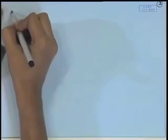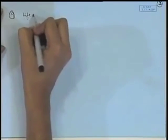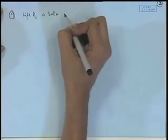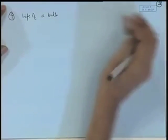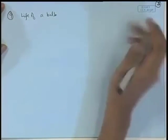Suppose we consider a mechanical instrument such as the life of a bulb. When you purchase a bulb from the market and light it, it may work for 1 hour, 10 hours, or 100 hours. Although all these bulbs may be produced by the same company under the same conditions, the actual life of the bulb is not fixed — it can vary.